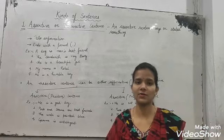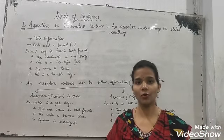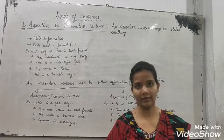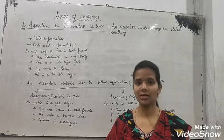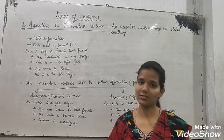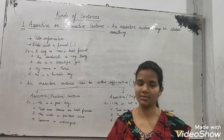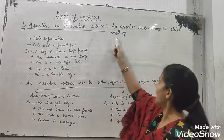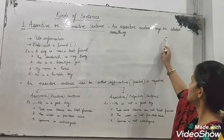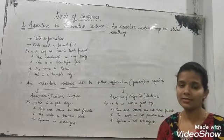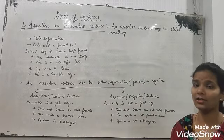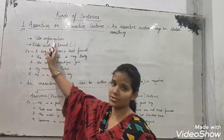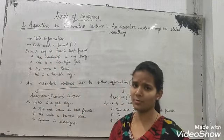Now we will do kinds of sentences. There are total four kinds of sentences. The first one is assertive or declarative. Second is imperative sentences. Third is interrogative sentences. And the last one is exclamatory sentences. An assertive sentence says or states something — it gives you some information. They are in the form of a statement and they tell information.